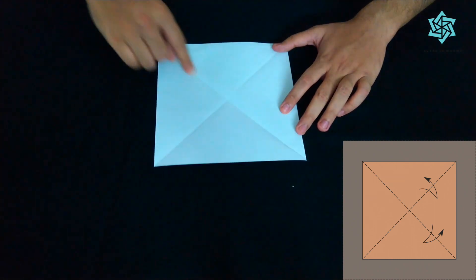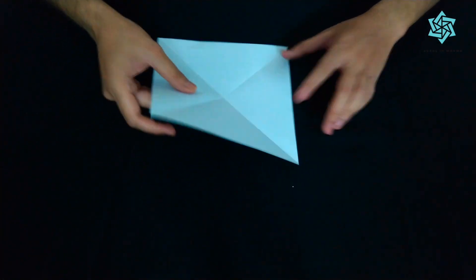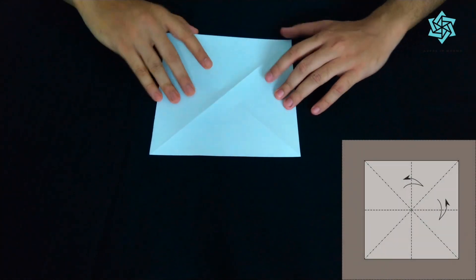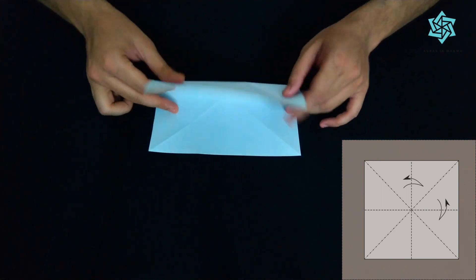So now as you all can see we have gotten a cross over here. So we'll turn this around and we want a plus over here so for that we'll take this crease and we'll fold it on top of the other crease.